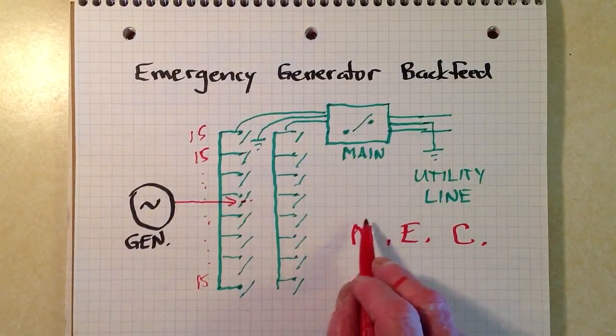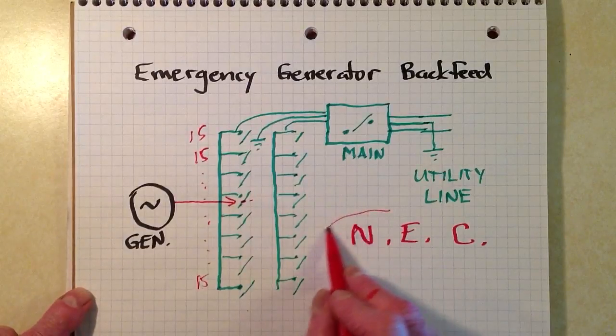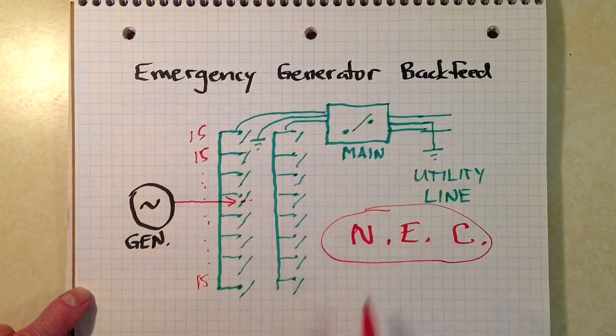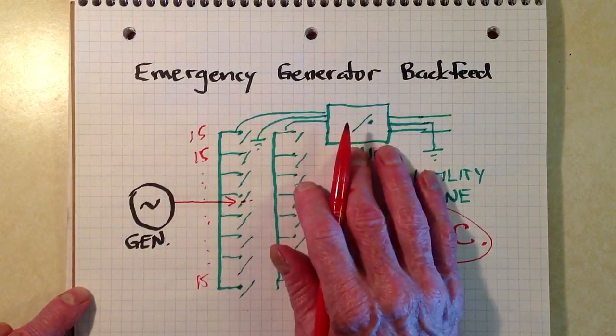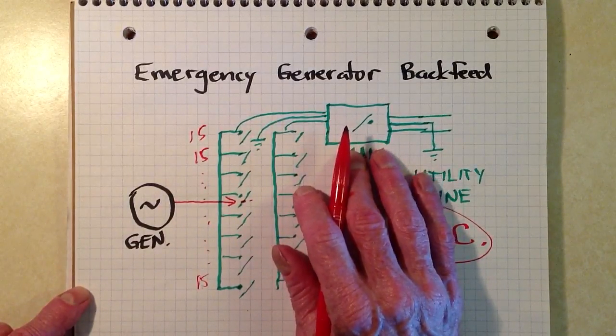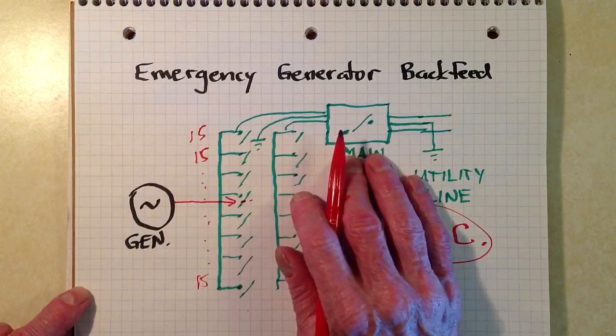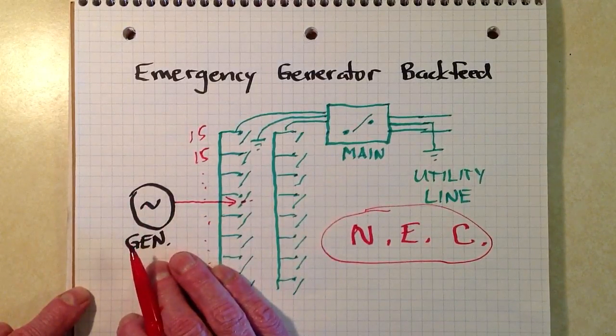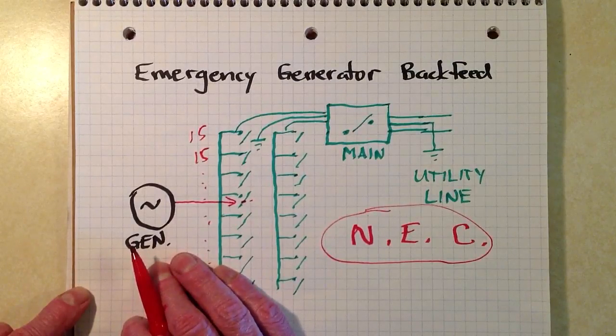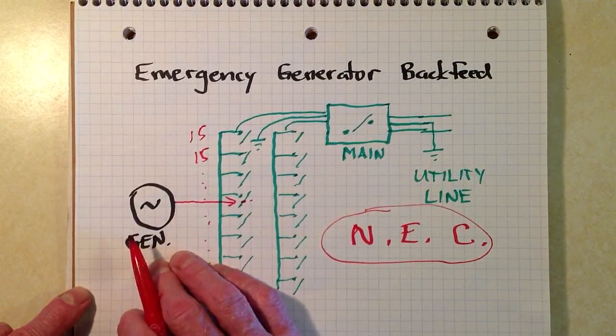But the main objection that I have to it, and the reason I would never do it, is that it violates the National Electrical Code. And if there was a fire in my house during an outage, God forbid, an electrical fire particularly, and the insurance company found out I'd been doing this, they probably would not pay my claim. They might even void my policy.